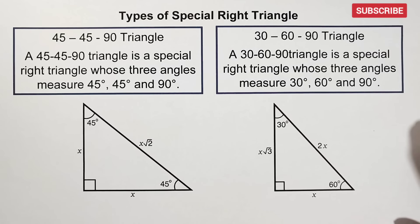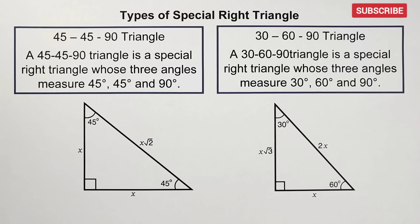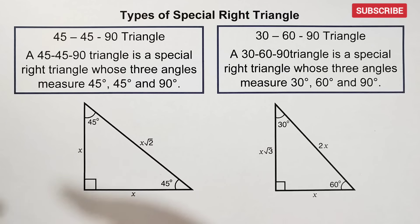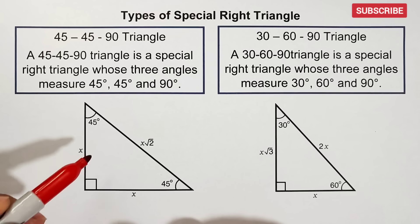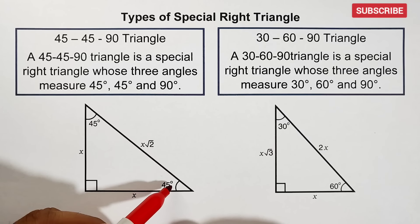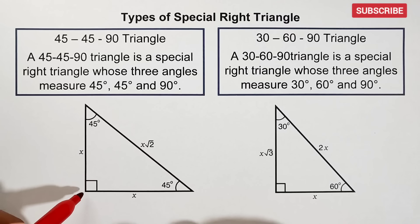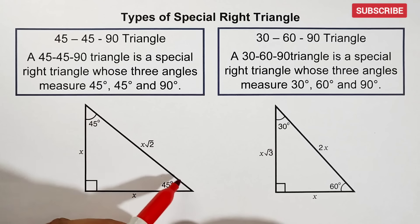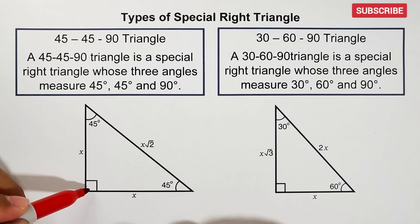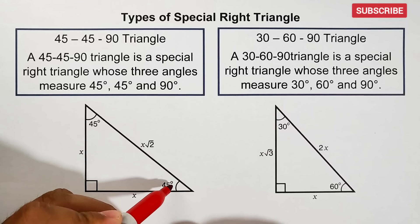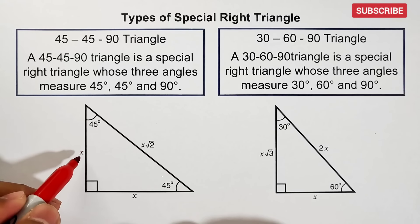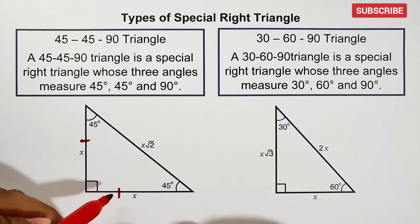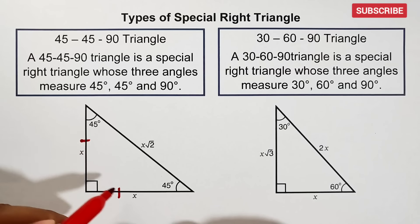Before we start solving for the sides of these special right triangles, we need to be familiar with the ratio of the lengths of each side. Let's start with the 45-45-90 triangle. This angle is 45, this angle is 45, and they are congruent. This is your right angle. This side is the hypotenuse because it is opposite to the 90-degree angle, while the other two sides are the legs. Since the angles are congruent, the two legs are also congruent — they have the same measurement.